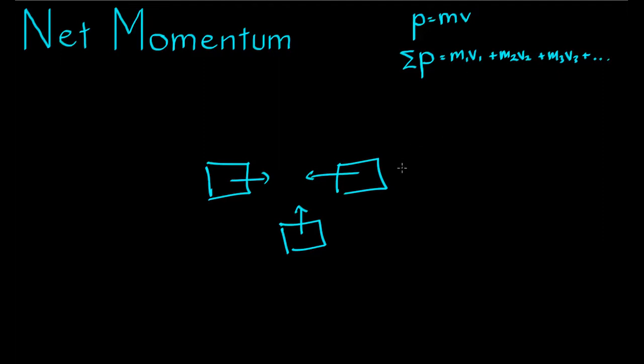In a closed system like this, the net momentum or the total momentum will never change. That is one of the fundamental rules of the universe. And we can use that rule to work out the final velocity if those objects do collide and stick together. So if you look at the system at one point in time and calculate the net momentum, and then look at the system another point in time, even if the velocity of all the objects has changed, the net momentum will not have changed.